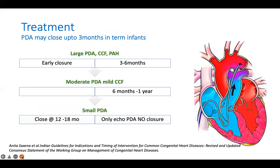Regarding timing of closure: a large PDA with CCF and PAH warrants early closure between 3 to 6 months — uncontrolled CCF may require even earlier closure. A moderate PDA with mild CCF: wait 6 months to 1 year. A small PDA can be closed at 12 to 18 months. All clinically evident PDAs are closed by 12 to 18 months. A PDA diagnosed only by echo with no clinical features and no murmur is the only PDA that is not closed. Thank you.